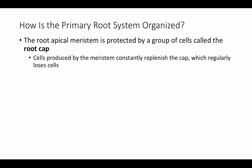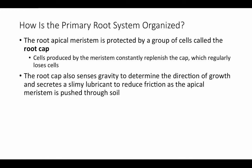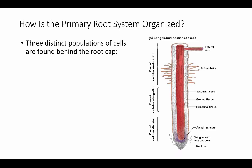Let's look at primary growth in the root system. The root apical meristem is protected by a group of cells called the root cap, which protects these actively dividing, delicate cells and is constantly replaced by cell division in the meristem. As root cap cells are abraded away moving through the soil, they're replaced from the meristem. The root cap also senses gravity to determine the direction of growth and secretes a lubricant to reduce friction as the apical meristem is pushed through the soil.